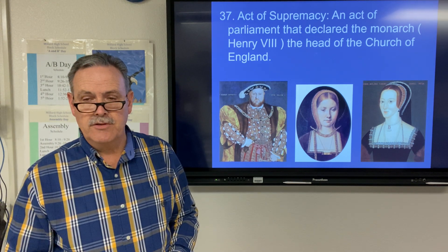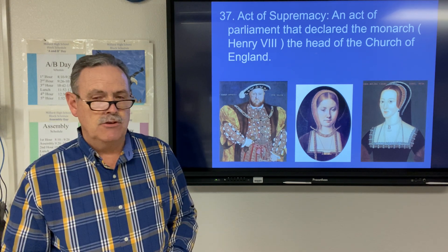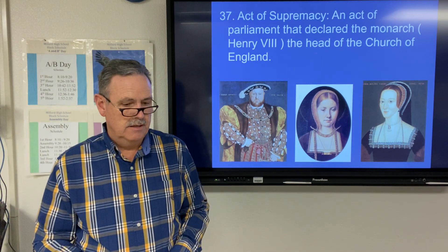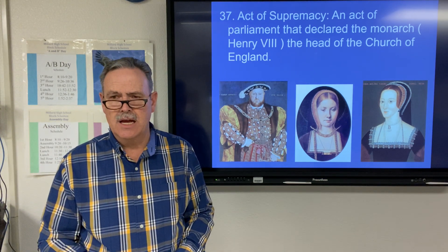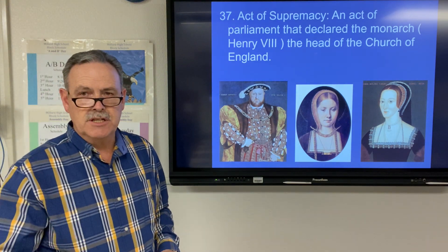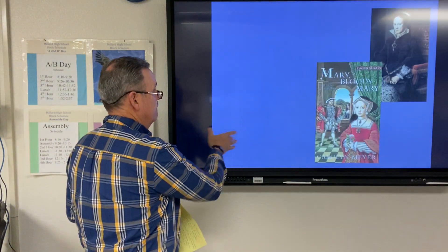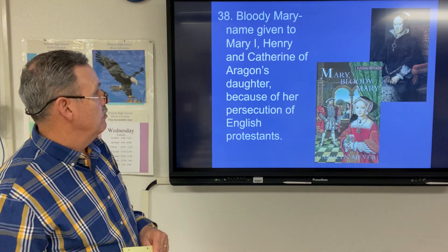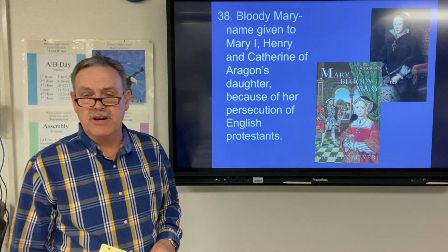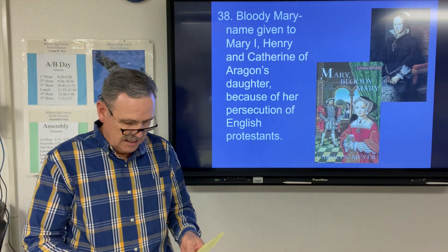Henry was eventually married to six wives. One of them did finally give him a son, but he was a sickly boy who didn't live very long in terms of really coming to power. Henry and Catherine of Aragon did have their one daughter, and she became known as Bloody Mary — a name given to Mary I because of her persecution of English Protestants.